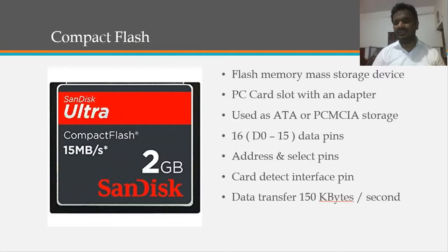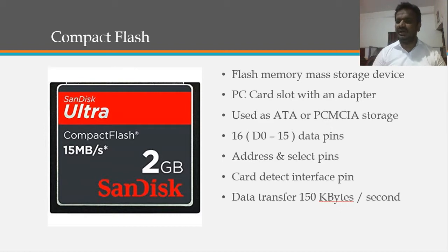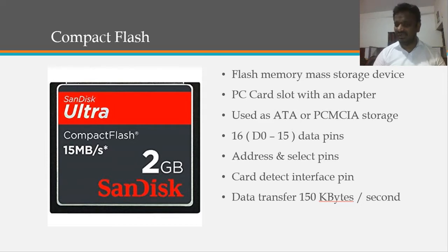Similar to SD or micro SD, earlier we had Compact Flash — a flash memory mass storage device. It uses a PC card slot, and with an adapter it can communicate with a PC. It is used as an ATA or PCMCIA storage device. It has 16 data pins (D0 to D15), four to five address pins, and a card detect signal that activates when the card is plugged in. It can transfer data up to 150 megabytes per second.